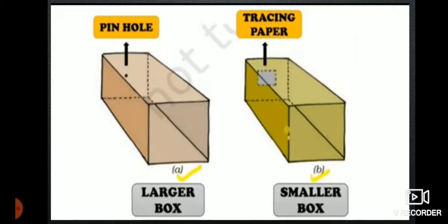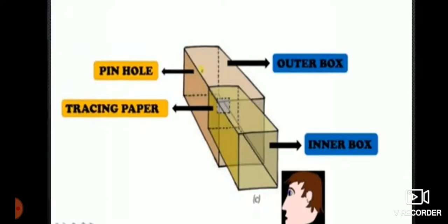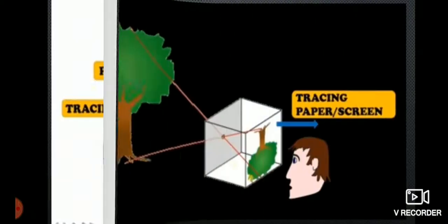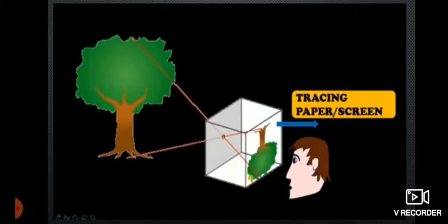Once more watch the picture and try to make a pinhole camera. The smaller box should be inside the larger box. Now, when we look at an object using a pinhole camera, we will get an inverted image. Please see the tracing paper screen. Here we will get the inverted image. Why we are getting the inverted image? Let us see.